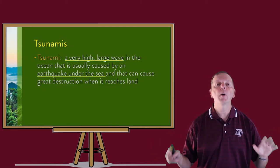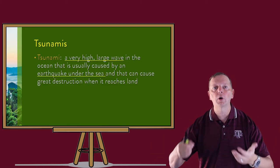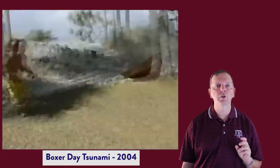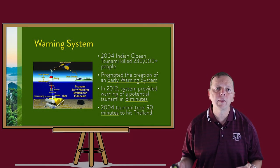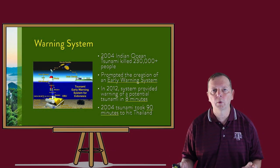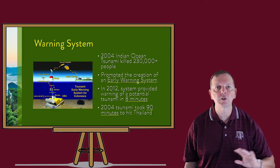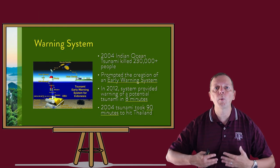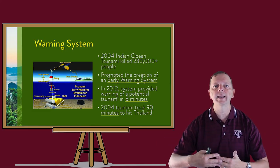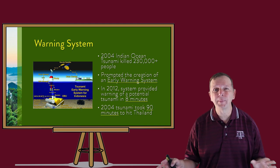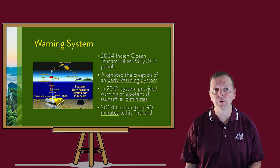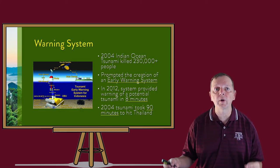We've talked about tsunamis several times and know that they are large waves largely created by underwater earthquakes. We also discussed the devastating tsunami that killed over 230,000 people in 2004 after a 9.0 earthquake in Indonesia. One thing that came out of that horrific tsunami is an early warning system that can provide warnings within eight minutes to anyone in the region. These systems can be lifesavers — the 2004 tsunami took nearly an hour and a half to hit Thailand after starting in Indonesia. Unfortunately, problems with this system caused it to fail to warn of a 2018 tsunami that killed 2,500 Indonesians, but it is an example of how Southeast Asians are trying to react to their environment.